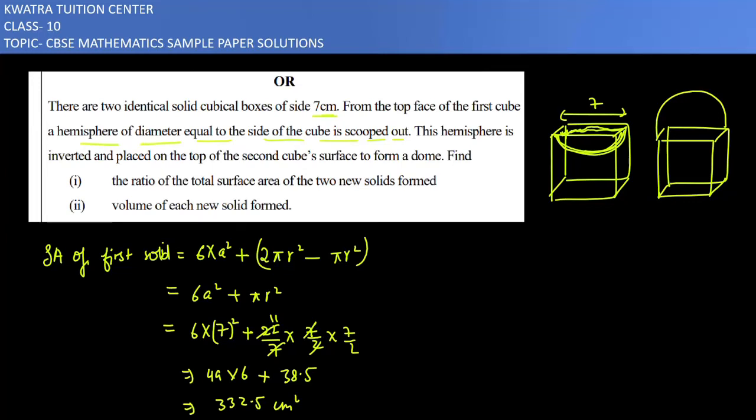Now we will be finding the surface area of second solid. It would be cube 6a² only. And this surface area, it is 2πr². The curved surface area of the hemisphere we are taking, and then we will minus πr². But our formula is the same. So it would be only 332.5.